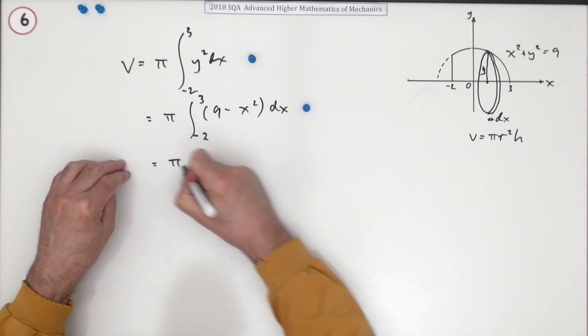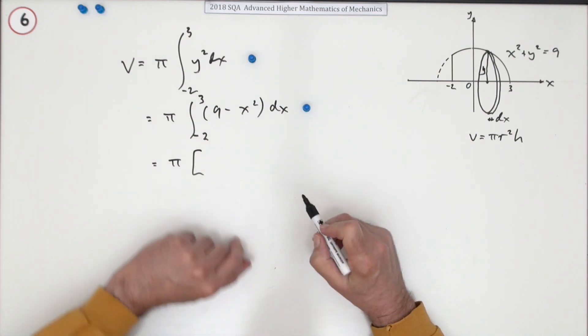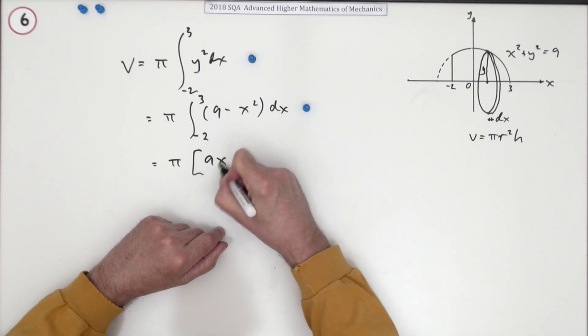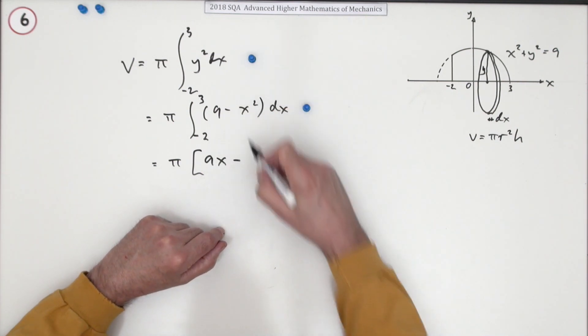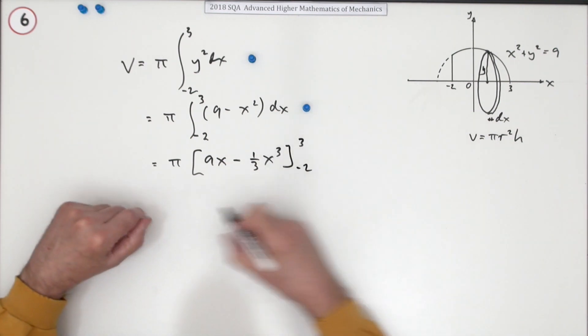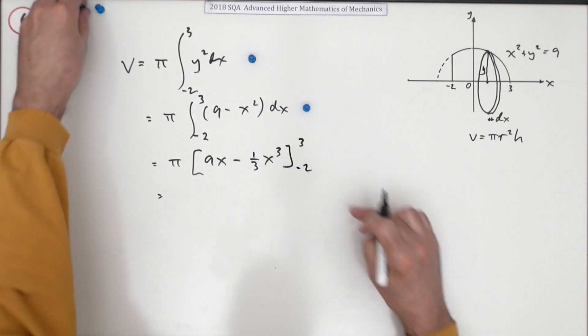That's a trivial little integration to do. So that's just a case of the constant term will go back up to a linear term. Power 2, so that's going to be 1 third of x cubed. And you evaluate it twice. Doing that gets you a mark.